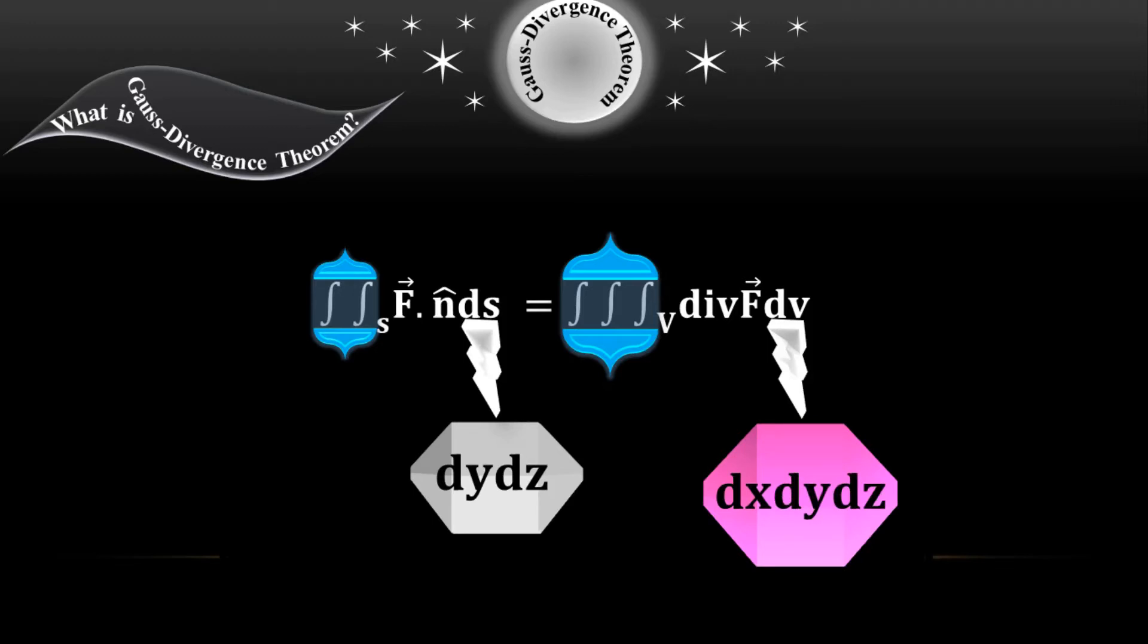Let me repeat it again. For the left hand side there will be double surface integration where the function is in 2D, whether in xy plane or yz plane or zx plane. While at the right hand side there are triple volume integration, so the function is in 3D: dx dy dz.